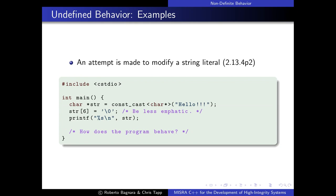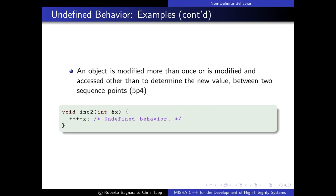Another example of undefined behavior is when an object is modified more than once, or is modified and accessed between two sequence points. In the example program, we have a reference to variable x which is pre-incremented twice in a row. This is undefined behavior because there is an attempt to modify the object twice between two sequence points.